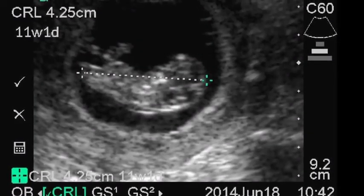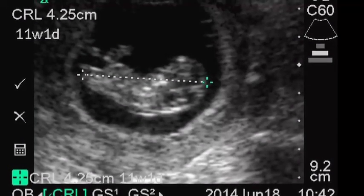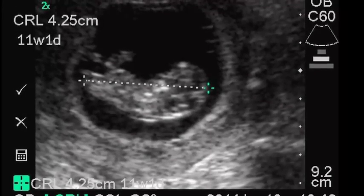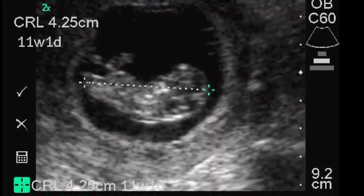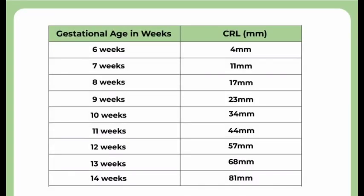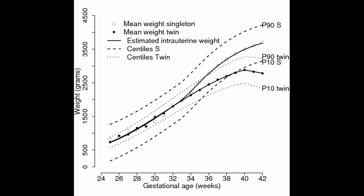Measurement of the crown rump length can easily be done at the time of the first trimester scan. Later in pregnancy, correction of gestational age should be avoided, since growth curves in multiple pregnancies differ from those in singleton pregnancies beyond the second trimester.